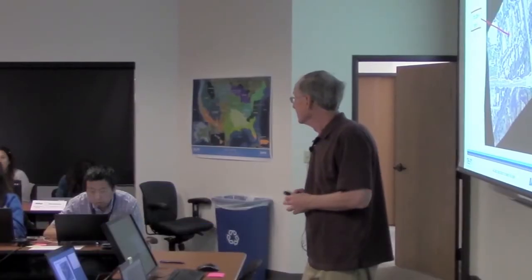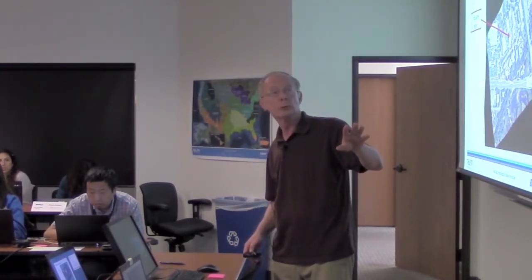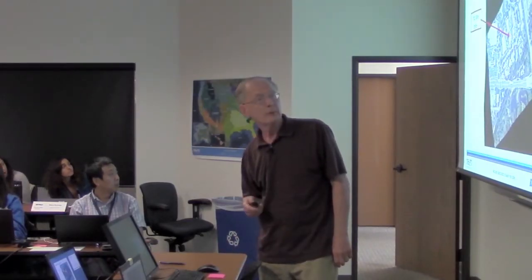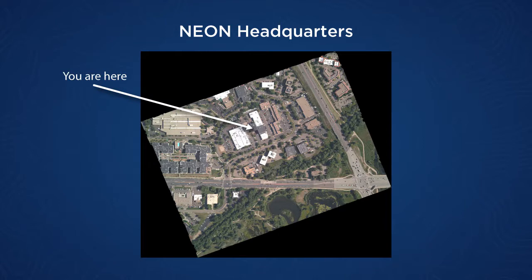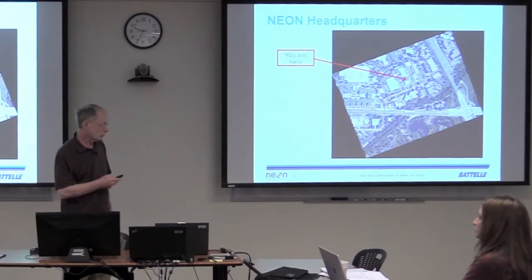I'm going to speak about the digital camera data. Here is a sample picture, an image we took over Boulder — you are right there, that's NEON headquarters in the classroom. This image has been ortho-rectified and the ground distance is about 800 by 600 meters, at 10 centimeter resolution.